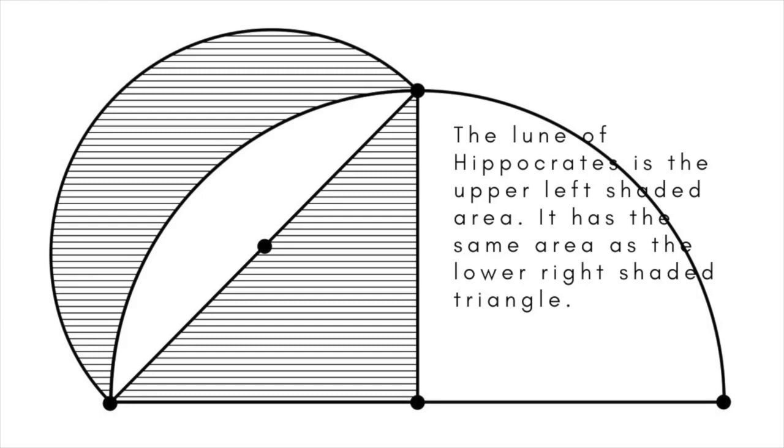In the 5th century BC, Hippocrates of Chios seemed to make progress toward a solution by proving that a particular lune, that is a crescent shape with two circular arcs, has the same area as a triangle. His results showed that you can construct a triangle, and with some more work, a square, with the same area as a shape with curved sides. But no one could extend this result to fully square the circle.